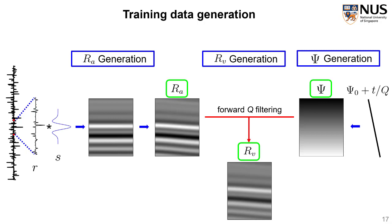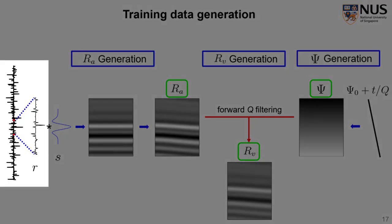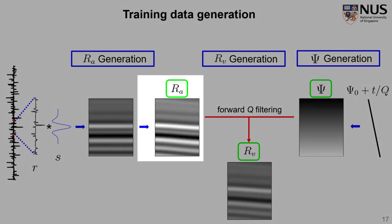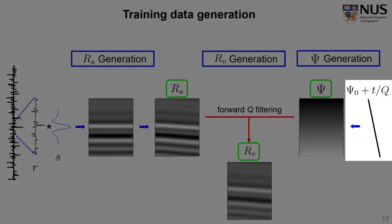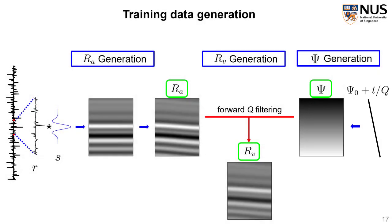By randomly selecting different pieces of reflectivity and using randomly different scale and shift, we can generate infinite number of different RA. Similarly, by using different ψ₀ and Q, we can also generate as many ψ patches as possible. The overall process is rather efficient since it is mainly based on filtering. Next, I will use a numerical example to illustrate the whole process and the test performance of our neural network.